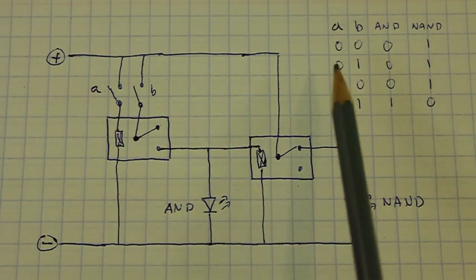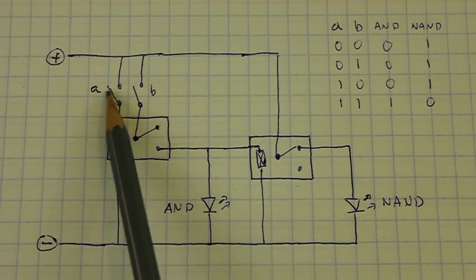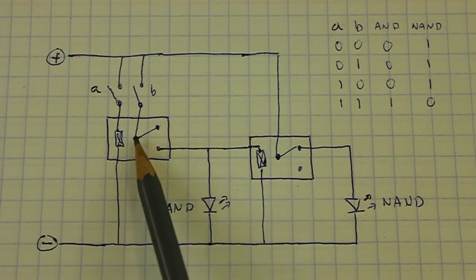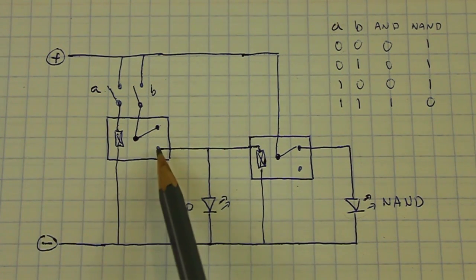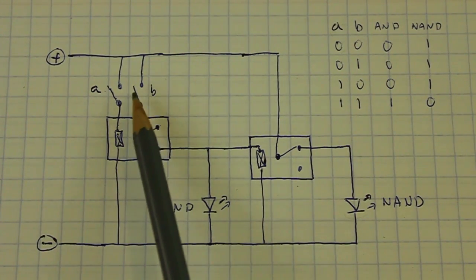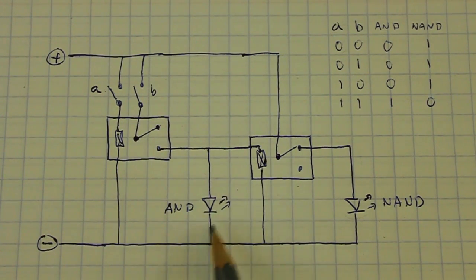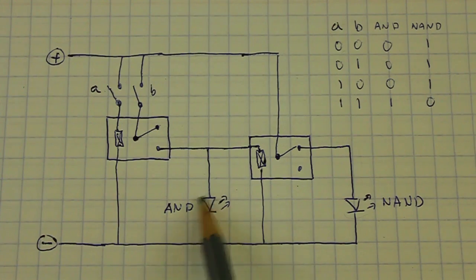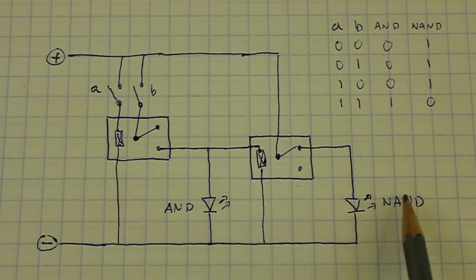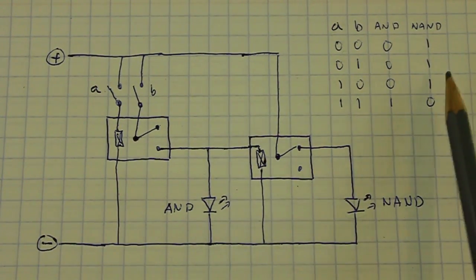The next case is switch A closed and switch B open. We close the switch. The current flows through the coil. This switch moves to the other position. But since B is not connected, it is open, the current cannot flow. This LED is still OFF. 0. And the other LED NAND is still ON. 1.